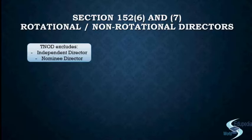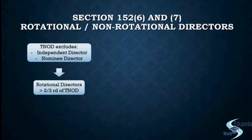Once you know the total number of directors in the company, you would know how many of them should be rotational. Not less than two-thirds of the total number of directors in a company should be rotational directors. The company can have two-thirds, more than two-thirds, or all of them as rotational, because the Articles of Association can provide for retirement of all directors at the annual general meeting. But as per the general provision, two-thirds of the total directors are rotational and the remaining are non-rotational directors.